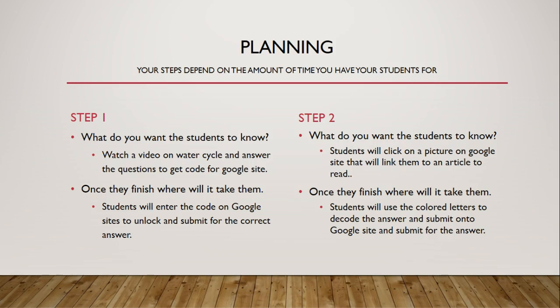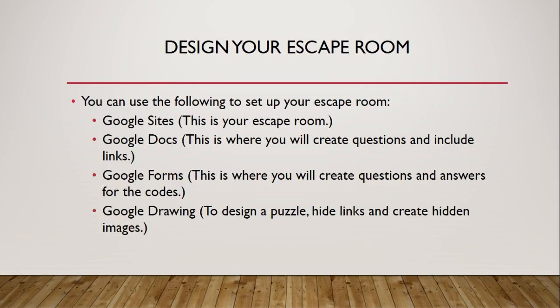Step two: again, what do you want your students to know? In this scenario I would want my students to click on a picture on a Google Site that links them to an article to read. Once they read the article, they'll understand that the sun is the power source behind the water cycle. Once they finish, students will use the color letters to decode the answer to submit onto a Google Site.